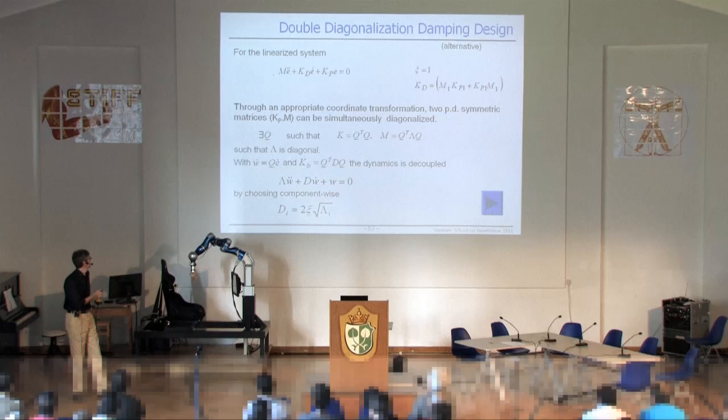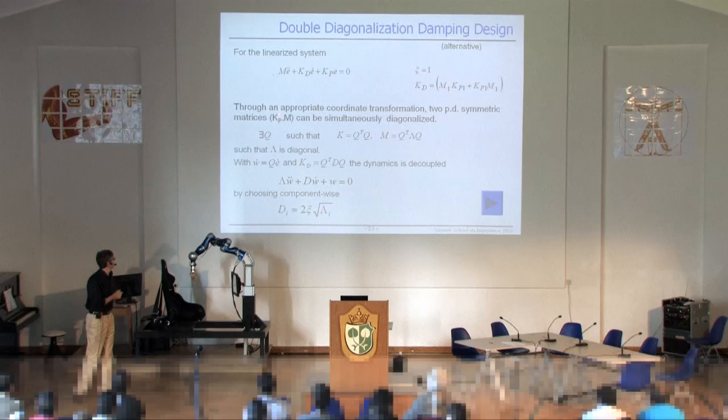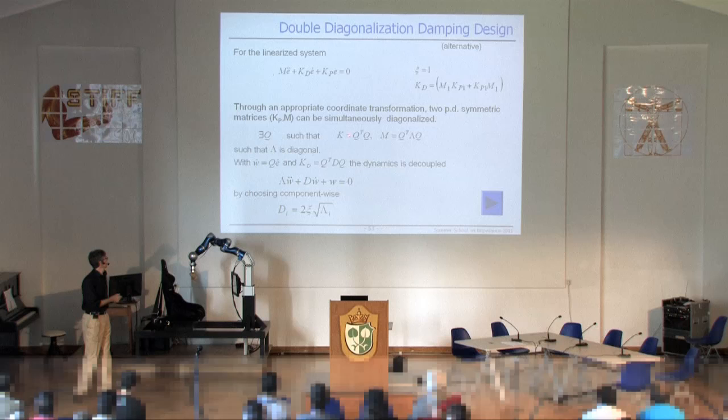The second approach is based on double-diagonalization. Basically, using two matrices which are positive definite and symmetric, you can find a matrix Q such that they are both diagonalized at the same time. For example, K is Q-transpose Q and M is Q-transpose lambda Q, where lambda is diagonalized.